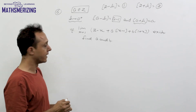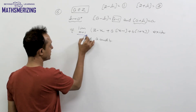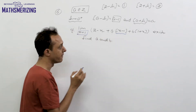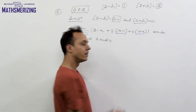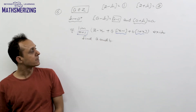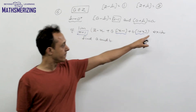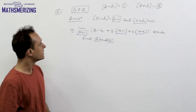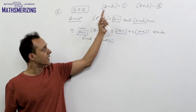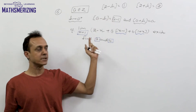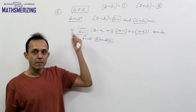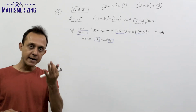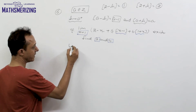Consider the question: limit as x tends to 1 of [2 - x + a·GIF(x - 1) + b·GIF(1 + x)]. It is given that this limit exists and we need to find the values of a and b. Since the Greatest Integer Function is discontinuous at integral points, I need to take both the left-hand limit and right-hand limit. So let me write the left-hand limit.